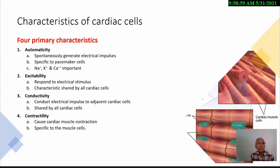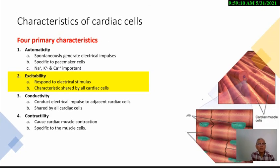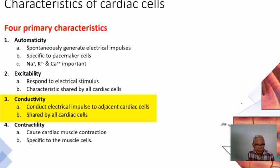Another primary characteristic of cardiac cells is excitability — the ability to respond to an electrical stimulus. When an electrical stimulus arrives in a cardiac cell, the cell is able to respond to it by contracting, therefore ensuring the heart's pumping ability. This characteristic is shared by all cardiac cells.